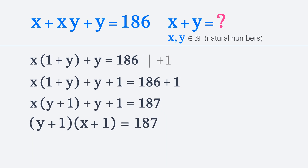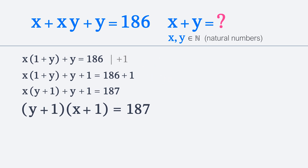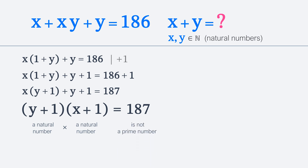Now let's see what we can do next. We know that x and y are natural numbers. Therefore, x plus 1 and y plus 1 are also natural numbers. Thus, we get the product of two natural numbers on the left side of the equation. 187 is not a prime number. The factors of 187 are 1, 11, 17, and 187.